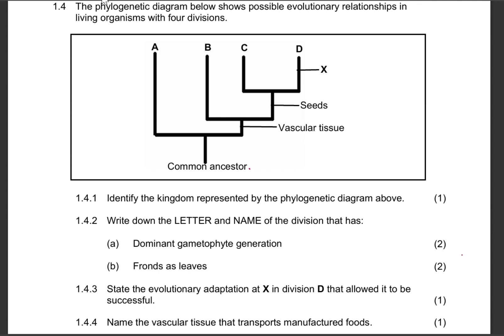Question 1.4: the phylogenetic diagram below shows possible evolutionary relationships in living organisms with four divisions. Question 1.4.1: identify the kingdom represented by the phylogenetic diagram above. Remember, we've got five kingdoms.